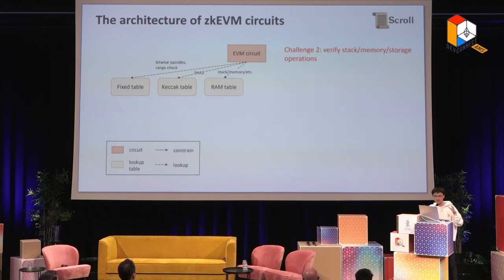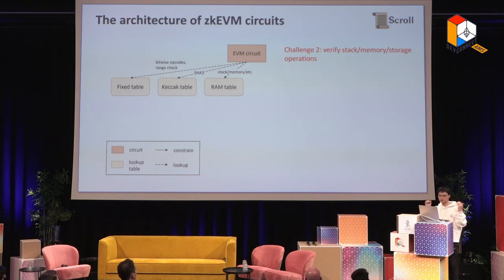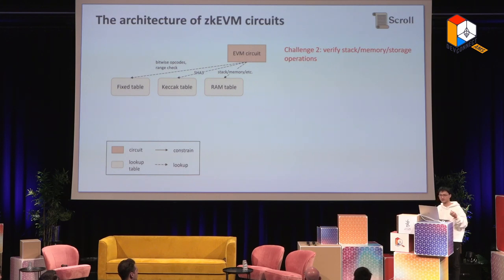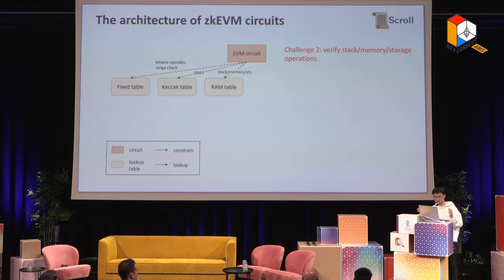Second challenge: EVM is a stack-based virtual machine, but ZK is built for a register-based virtual machine with cells, transition functions, and all that. For each operand you are operating on, you have a RAM table. For even a simple add operation, you need to pop two elements and push one element back. For each element, you look up the RAM table. If it exists in the RAM table, then it's correct. For now, just assume every table is generated correctly — I will introduce that later. This is how we handle stack, memory, and storage.